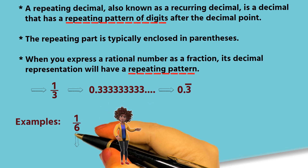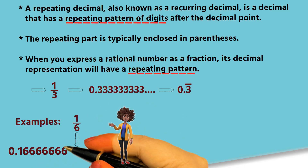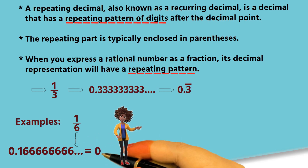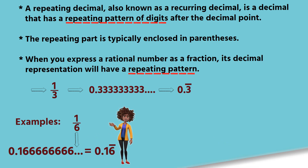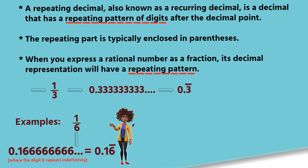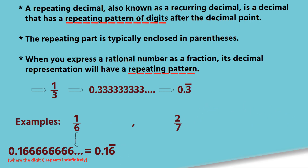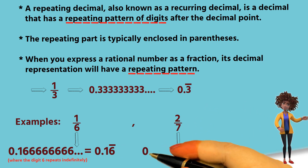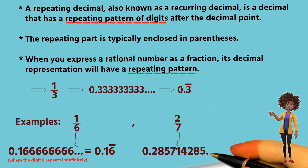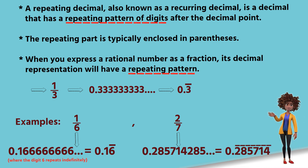Another repeating decimal example: consider the rational number 1 over 6. When expressed as a decimal, it becomes 0.16 bar, where the bar above the digit 6 indicates that 6 repeats infinitely in the decimal expansion. Similarly, 2 over 7 equals 0.285714 bar, repeating 285714.